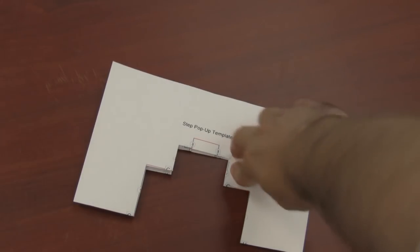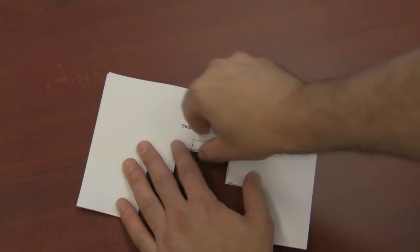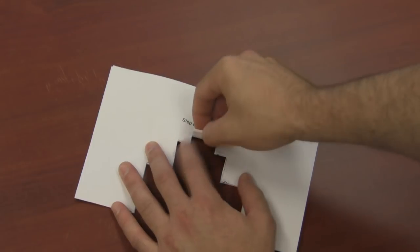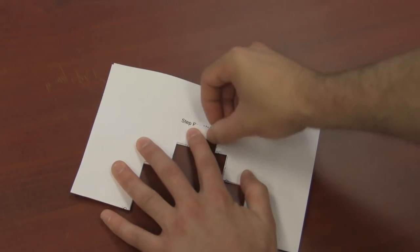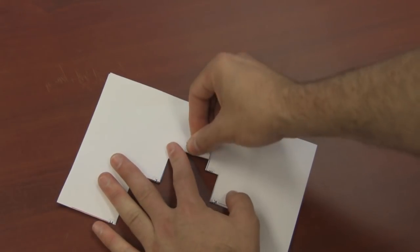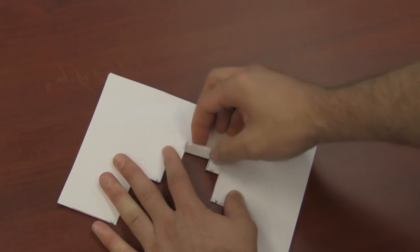Then I'm going to take the folded pop-up or the flaps that I created and fold forward, crease. I'm going to turn the sheet over, fold forward again, like so. Flip it back over.